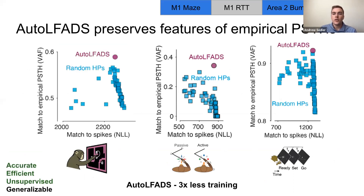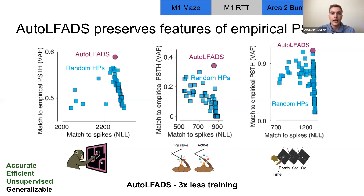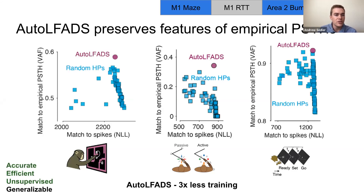We trained auto LFADS out of the box along with about 100 LFADS models with random hyperparameters for each dataset. We calculated PSTHs for smooth spikes, auto LFADS rates, and LFADS rates by averaging across trials, and calculated the coefficient of determination between empirical and modeled PSTHs. Auto LFADS retains features of empirical PSTHs better than any random search model for all three very different brain areas — from a motor area on the left to a sensory area in the middle and a cognitive area on the right. Notably, these random searches used three times the computational resources and required supervised evaluation to select the best model.